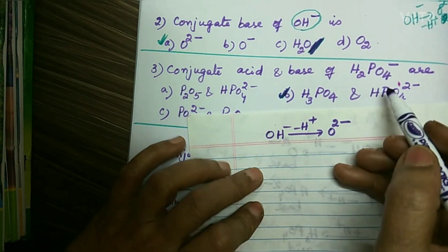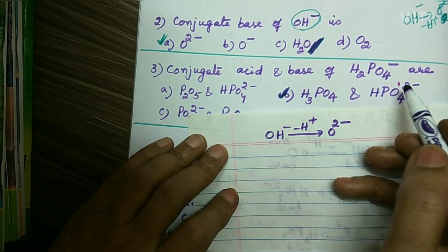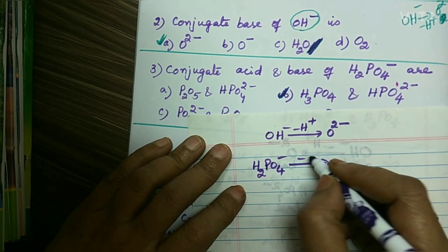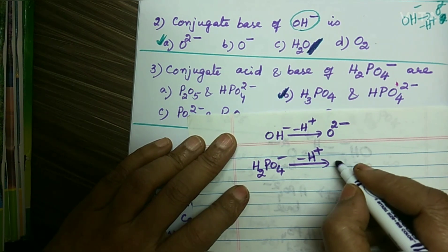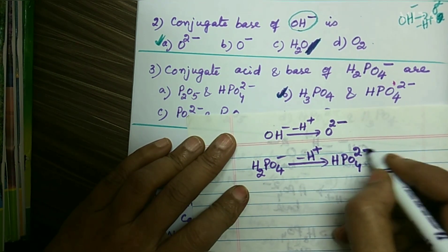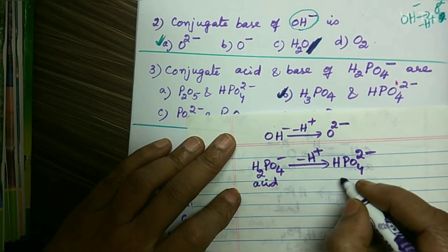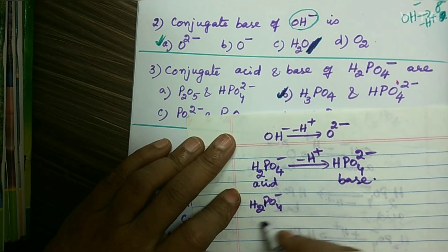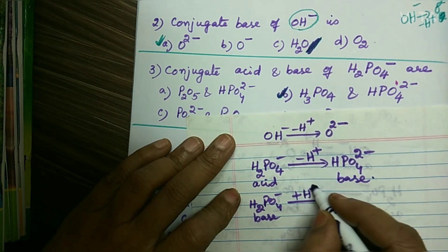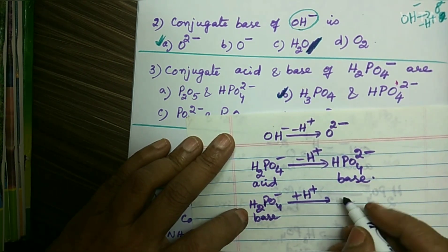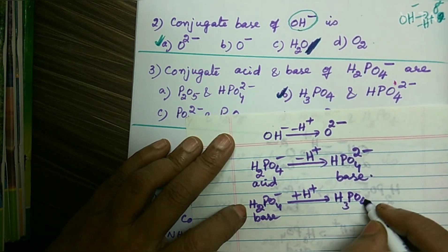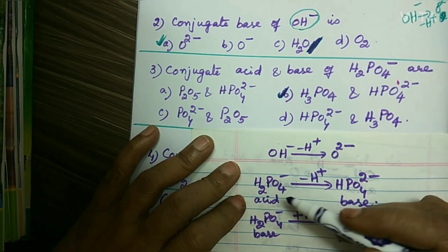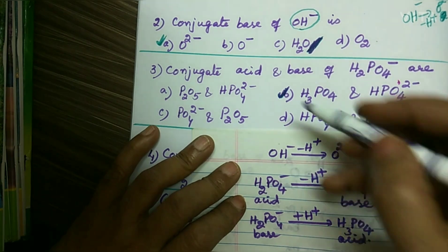The second question asks for the conjugate acid and conjugate base of H2PO4⁻ ion. H2PO4⁻ can act as both a Bronsted acid and a Bronsted base. When it acts as an acid, it loses one proton to form HPO4²⁻, which is the conjugate base. When H2PO4⁻ acts as a base, it takes a proton to form H3PO4, which is the conjugate acid. So the conjugate acid of H2PO4⁻ is H3PO4, and the conjugate base is HPO4²⁻. Option B is the correct answer.